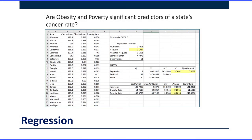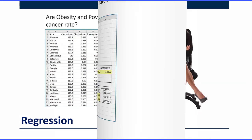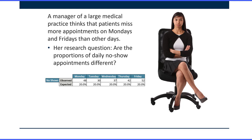We can use a regression to see if two variables are correlated, or we can predict one variable from the other. This is a multiple regression where we've got obesity and poverty as the independent variables predicting a state's cancer rate. So what can we use a Chi-square for? Let's look at some examples.